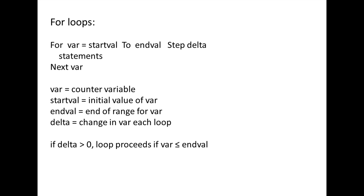If the initial value of var is less than or equal to endVal, the statements inside the loop are executed. However, if the initial value of var is greater than endVal, VBA will skip the loop. After the statements are executed and the loop reaches the next var statement, var is incremented by delta and VBA returns to the top of the loop. If var is still less than or equal to endVal, the statements in the loop will be executed again with the updated value of var. This looping process is repeated until var is greater than endVal, at which time the loop is terminated.